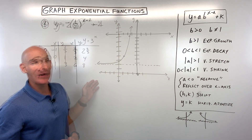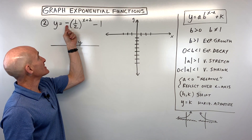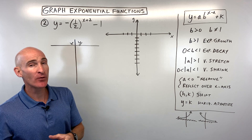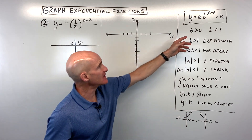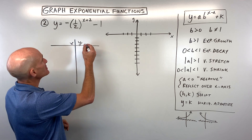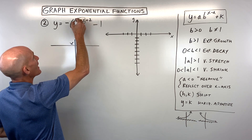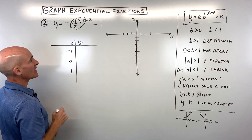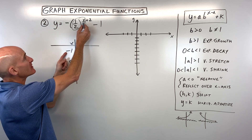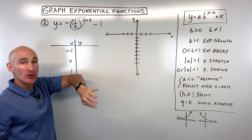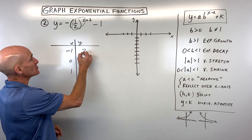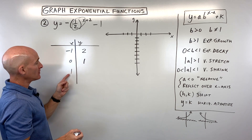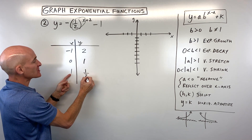Let's take a look at another example. In example number 2, we have y equals negative 1 half to the x plus 2 power minus 1. Let's focus on the parent function, just b to the x — so we're looking at y equals 1 half to the x. Making a table with negative 1, 0, and 1: 1 half to the negative 1 — remember that negative exponent, you take the reciprocal — gives us 2. 1 half to the 0 is 1, and 1 half to the first is 1 half.